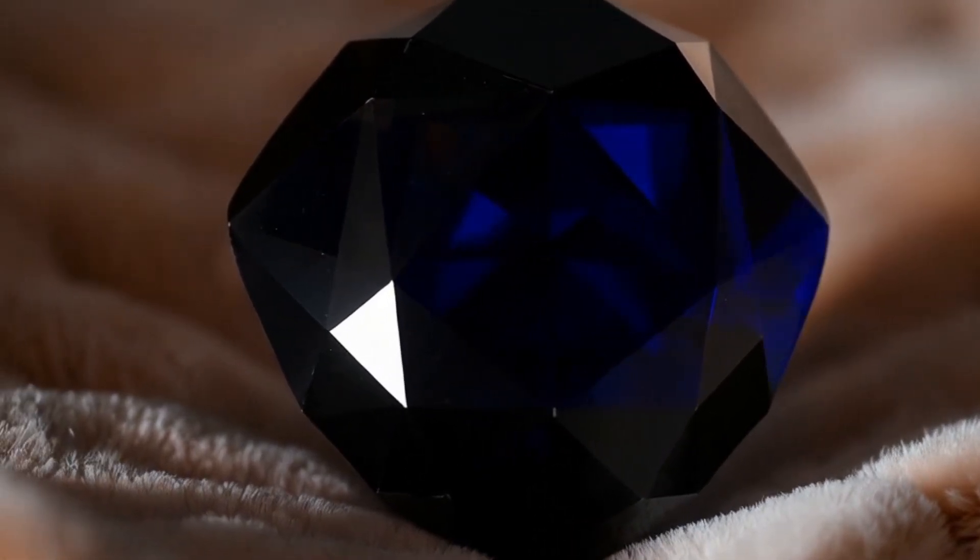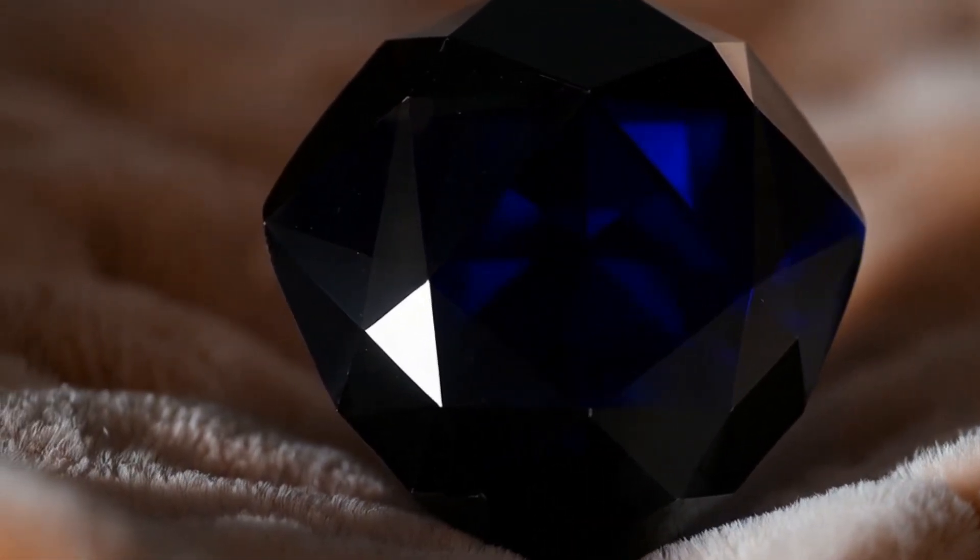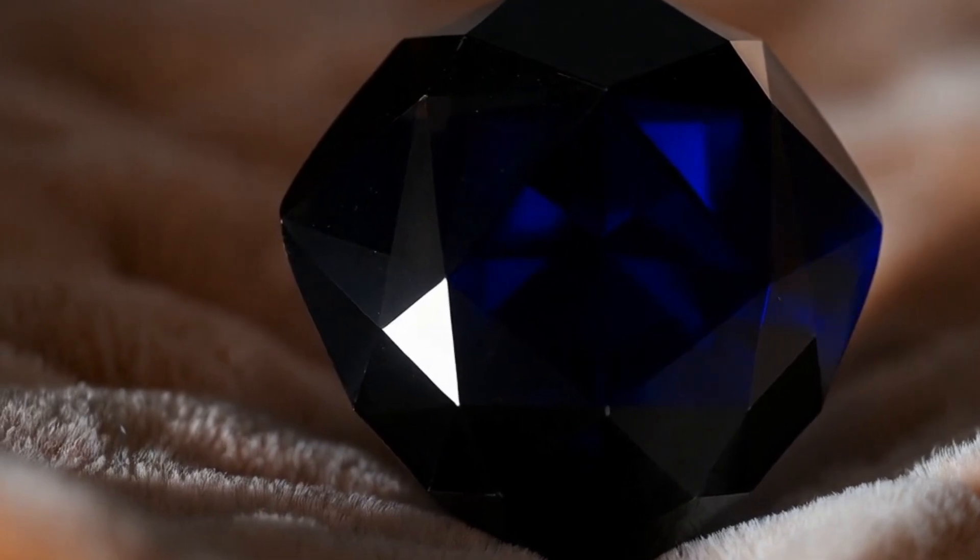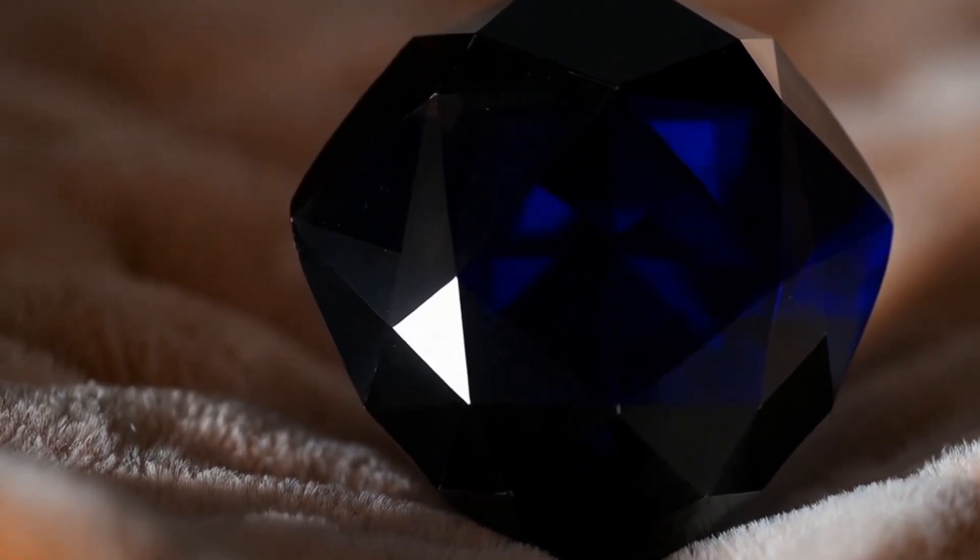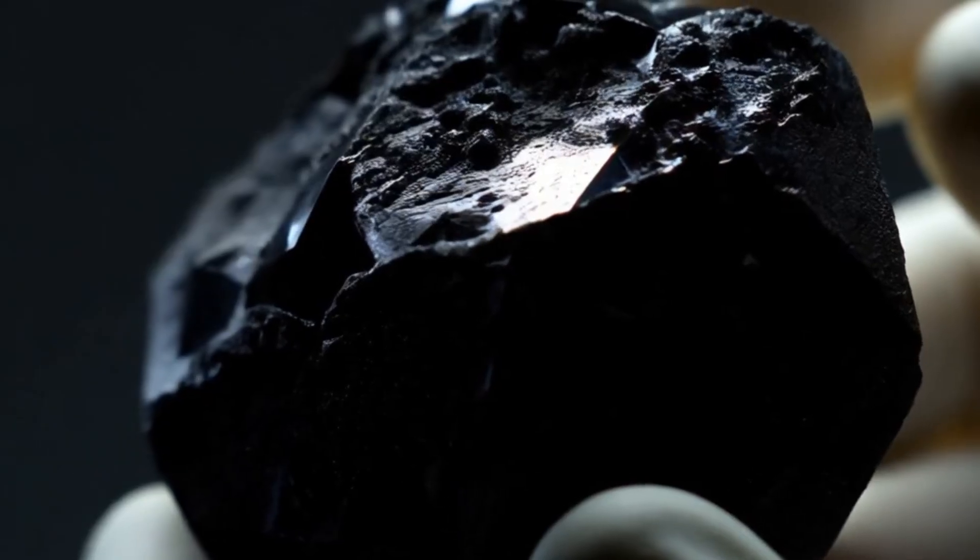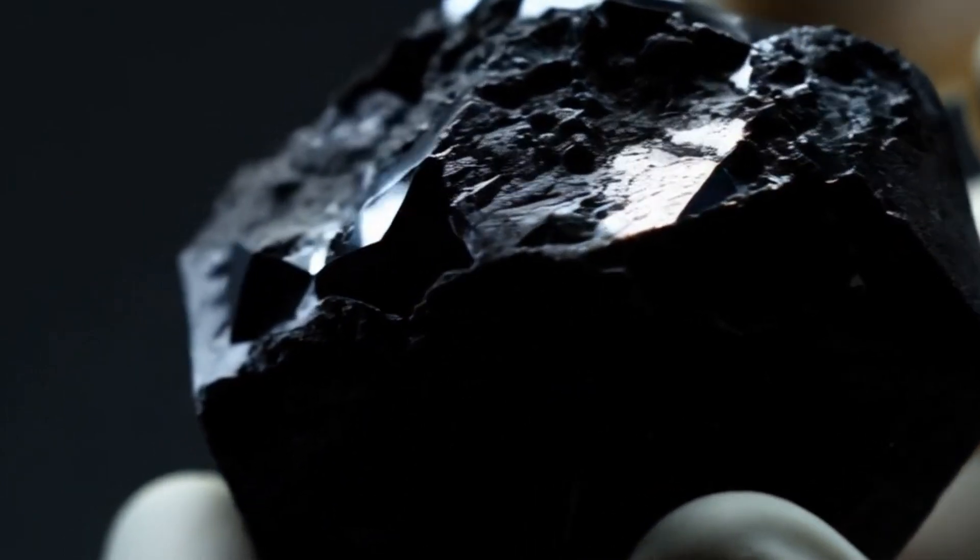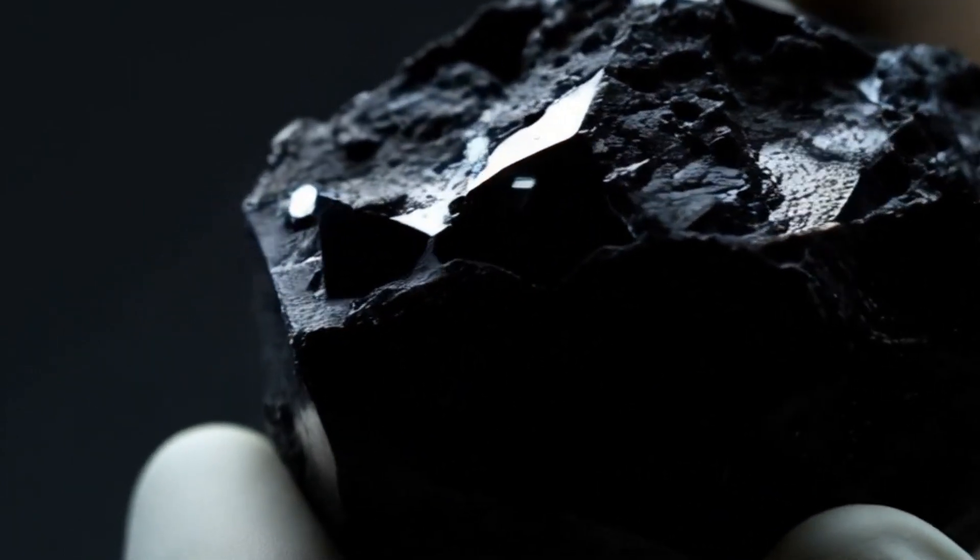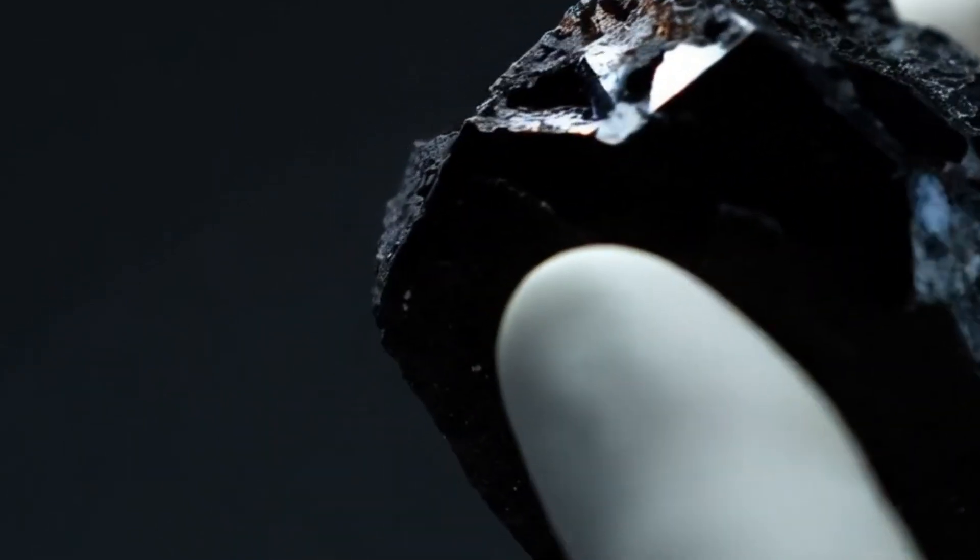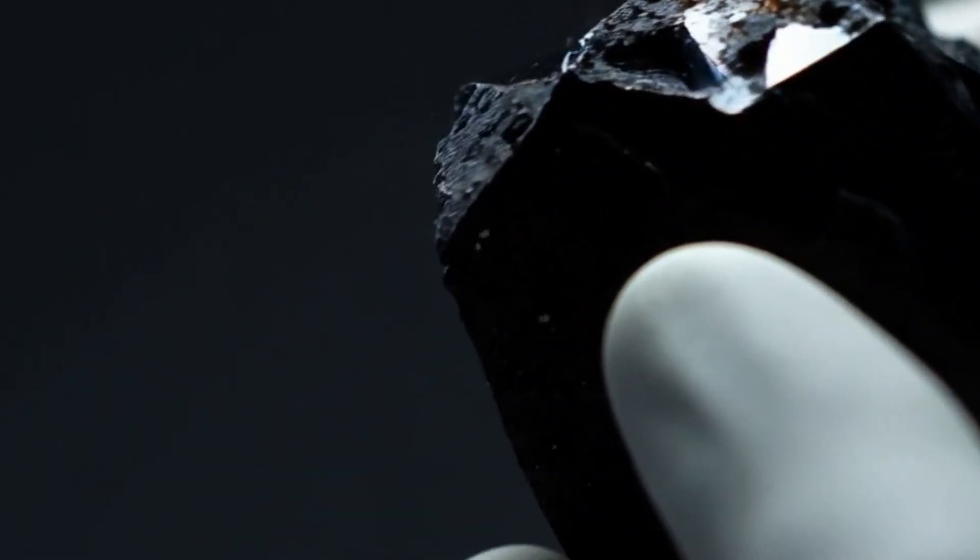1. Hardness check: the scratch test. Black diamonds are extremely hard. Use a piece of glass or unglazed ceramic. If the stone scratches the surface and remains unharmed, that's a promising sign. If the stone itself scratches easily, it's likely not carbonado. Carbonado is tough, dense, and resistant, even though its surface isn't as smooth as clear diamond.